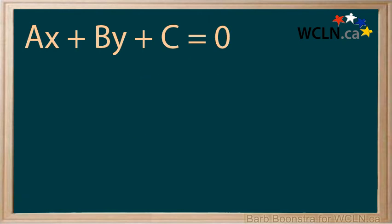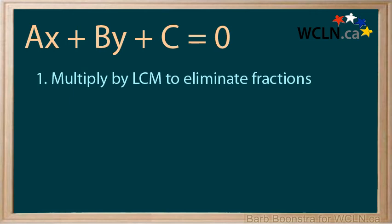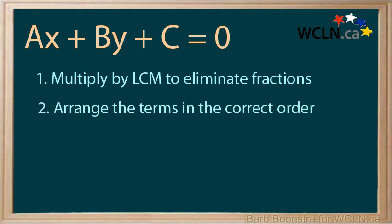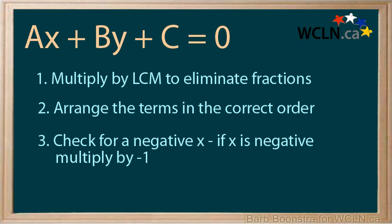There are a number of steps used to rewrite a linear equation in general form. The first step is to multiply the equation by the lowest common multiple of any fractions that happen to be there. Then arrange the terms in the correct order: Ax + By + C = 0. The last step is to check to make sure that the coefficient of x is not negative. If it is, multiply by -1 to take care of this.